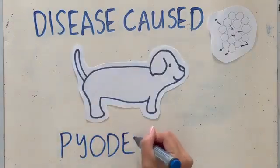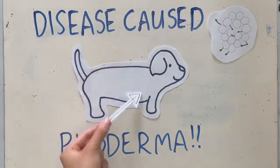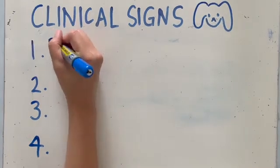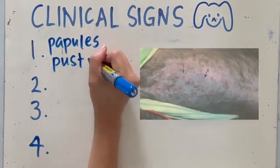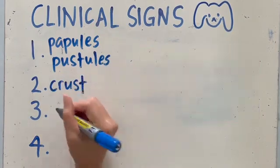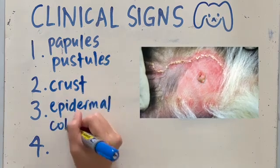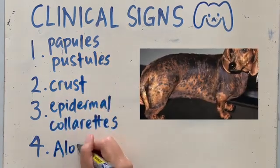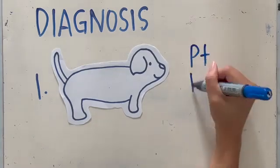Staph causes pyoderma mainly, but can also cause otitis externa and infections through the respiratory tract, urinary tract, and reproductive tract. Common lesions associated with pyoderma include erythematous papules and pustules that may or may not be crusted, epidermal collarettes, and alopecia. Extensive alopecia areas may also give a moth-eaten appearance in some short-coated breeds.